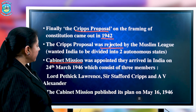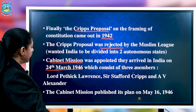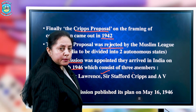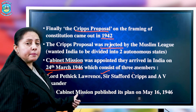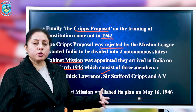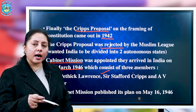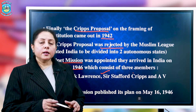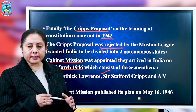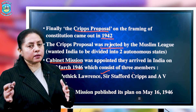The Cabinet Mission arrived in India on March 24, 1946. It consisted of three members: Lord Patrick Lawrence, Sir Stafford Cripps — who was also in charge of the earlier Cripps Mission — and A.V. Alexander. The major question before these three people was how to resolve the differences between the INC and the Muslim League. Muslims were demanding a separate state of Pakistan, whereas India wanted one complete state. They failed to reach a conclusion, but they did not want to return without giving any solution.